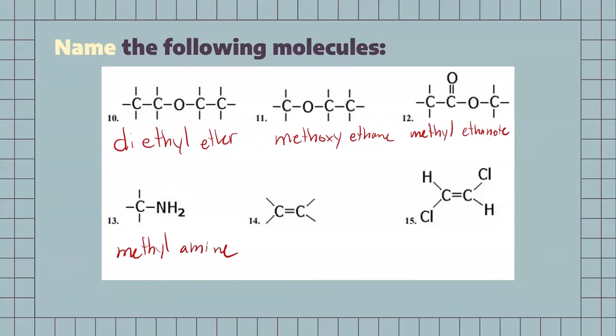For our next one, we do have a double bond present, so it's going to be a type of alkene. Since there's two carbons, we're going to call this one ethene.